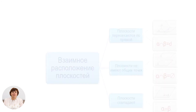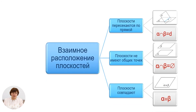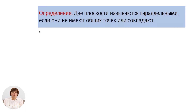Обобщим взаимное расположение плоскостей. Первый случай – плоскости пересекаются по прямой. Второй случай – плоскости не имеют общих точек. Третий случай – плоскости совпадают. На основе рассмотренных ситуаций дадим строгое определение: две плоскости называются параллельными, если они не имеют общих точек или совпадают.